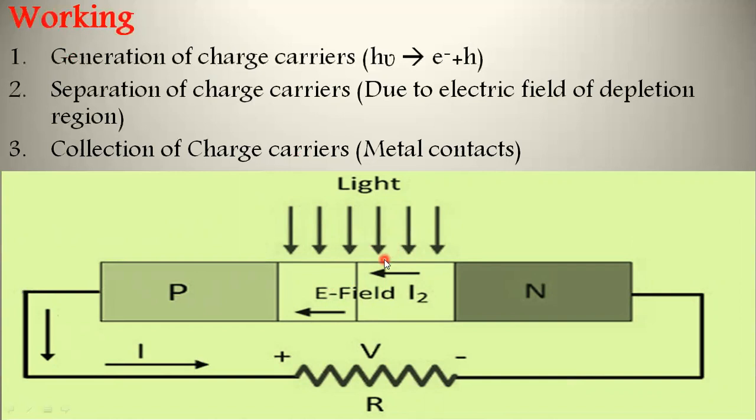Second is separation of charge carriers. Once the electron-hole pair generates in the depletion region, the electric field of the depletion region separates the electrons and holes. The electrons are swept to the N side and holes are swept to the P side. As we know, holes move in the electric field direction.